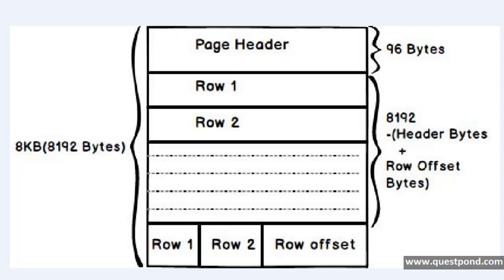Let us quickly revise what we have learned. First, SQL Server stores data in pages, and every page is 8KB in size. Second, SQL Server divides each page into 3 sections: the page header (96 bytes), followed by the data rows, and finally the row offset at the bottom which points to where each row is located. Finally, when a page gets filled up, SQL Server creates new pages to accommodate new rows. This video covered how SQL Server rows get stored internally, what a page is, and the structure of a page.